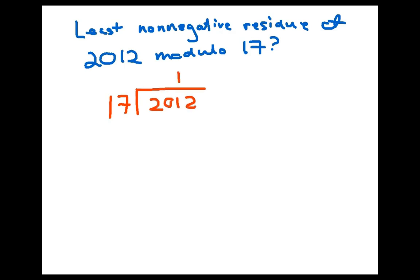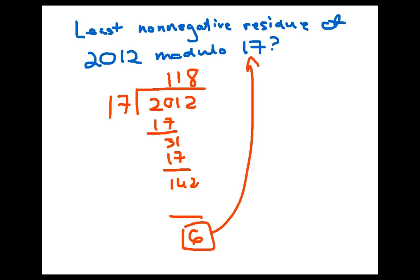So the result that we quoted above says that we can just look to the division algorithm for this. We can implement the division algorithm through just regular long division and I'm going to do that here on the screen. We see here that 17 goes into 2012 one hundred eighteen times and the remainder is 6. So that means that 2012 is congruent to 6 mod 17 and moreover that 6 is the least non-negative number to which 2012 is congruent mod 17. It's the least non-negative residue.